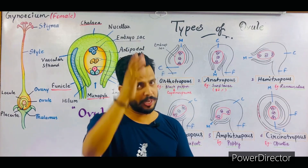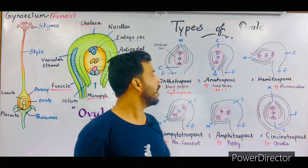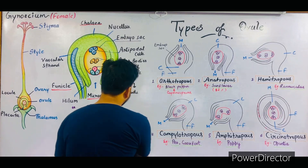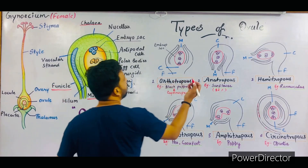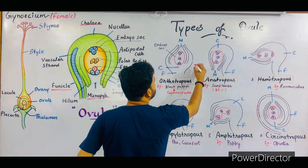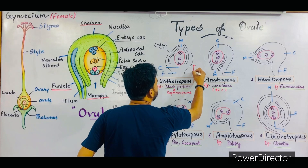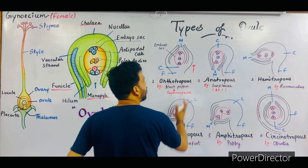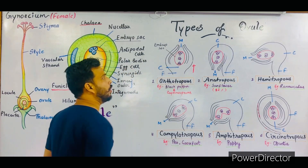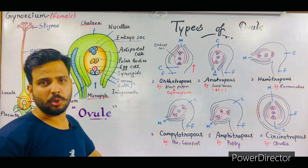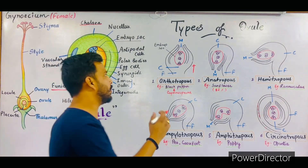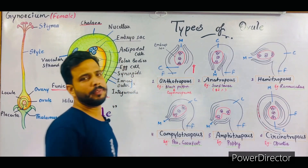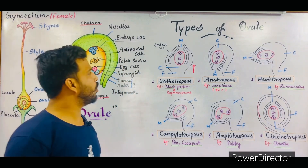The symbol for orthotropous ovule is a straight line representing that the ovule is straight. This straight line represents the orthotropous type of ovule.